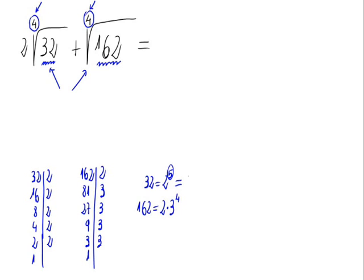So 2 to the 5th is equal to 2 raised to the 4th times 2. And now for the 162, the 3 is already with the exponent 4.